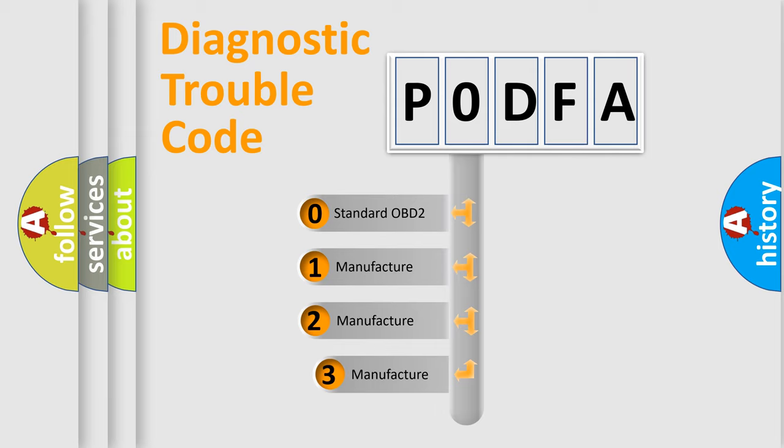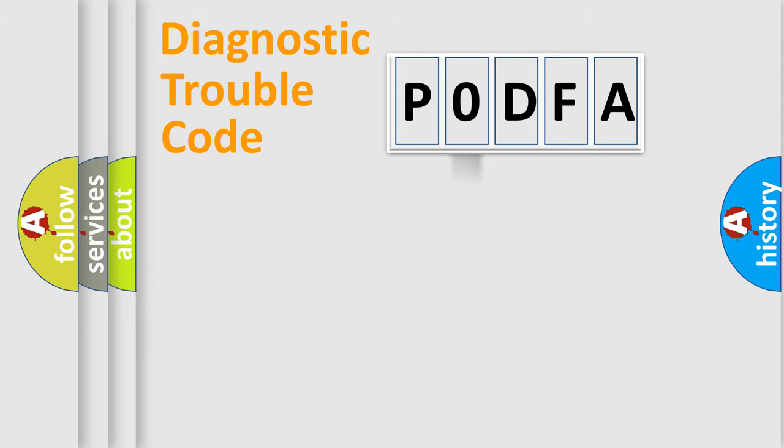If the second character is expressed as zero, it is a standardized error. In the case of numbers 1, 2, or 3, it is a manufacturer-specific error.